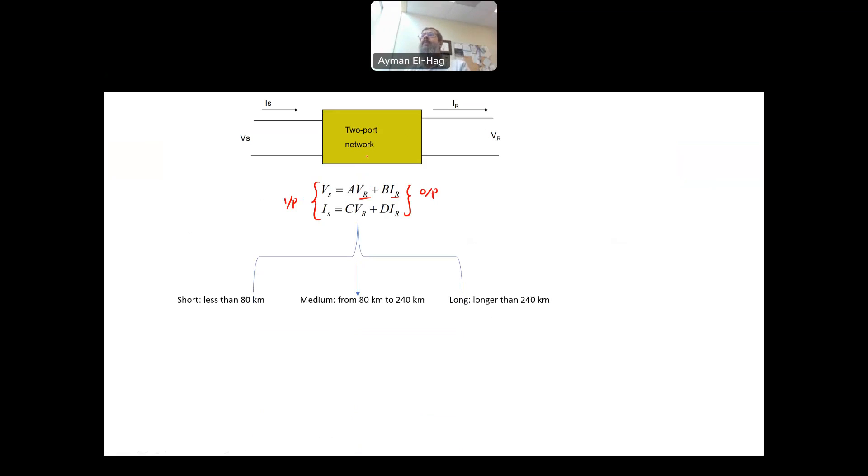There are basically different models or ABCD parameters depending on the length of the line. So we have the short, which is less than 80 kilometers, the medium between 80 to 240, and the long, which is more than 240 kilometers. Now the values of the ABCD are different. The formulas are different based on the transmission line length and hence the magnitude or the values for these parameters. Also, for the long transmission line, basically we have that lossy line where you include the resistance and that lossless line. So overall we have four different models. Most of the time the questions are about long transmission lines, very little about the medium. Sometimes they consider the losses, sometimes they don't.